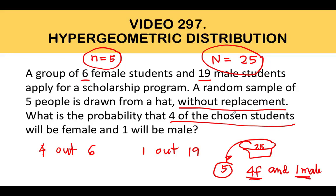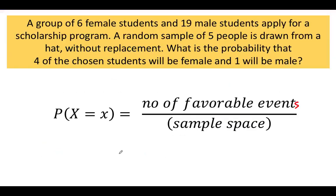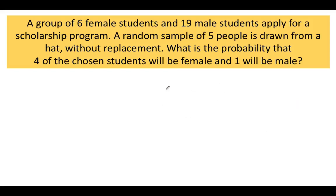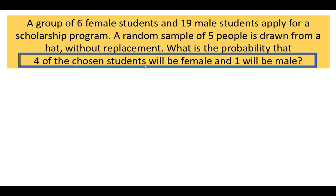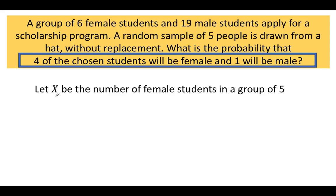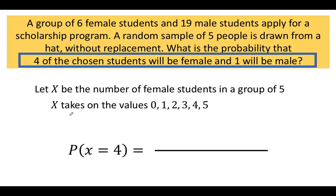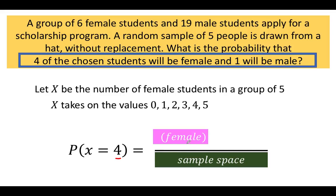Let's solve this problem first without using a formula, just by analyzing the situation. To find the probability of an event, we get the ratio of the number of favorable events divided by the sample space. In our problem, we want to choose four female students and one male student out of a total of 25 persons. If we let our random variable x be the number of female students in the group, it could take values of 0, 1, 2, 3, 4, or 5 females. The probability that x equals 4 is computed as the number of ways to select females times the number of ways to select males, divided by the sample space.